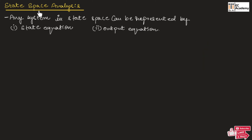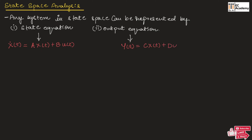If we consider state space analysis, any system in state space can be represented by two equations. First one is the state equation and second one is the output equation. Generally, the state equation can be represented as: x-dot(t) = A·x(t) + B·u(t). And the output equation can be represented as: y(t) = C·x(t) + D·u(t).